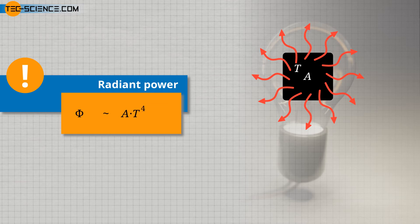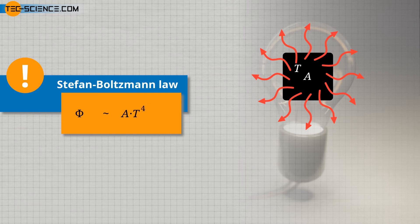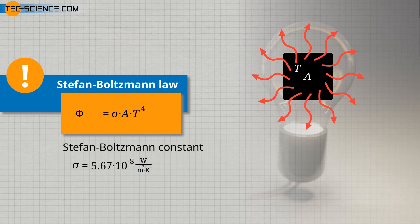A doubling of the temperature from, for example, 1000 Kelvin to 2000 Kelvin thus increases the radiant power by a factor of 16. Thus, for a radiating object, the radiant power is determined by the given law. This law is also known as the Stefan-Boltzmann Law, which states that the radiant power of an object in thermal equilibrium is proportional to the fourth power of temperature and directly proportional to its surface area. By introducing a proportionality factor sigma, the Stefan-Boltzmann Law can be formulated quantitatively. This constant is called the Stefan-Boltzmann constant and is a universal constant, meaning it does not depend on the material of the radiating object.